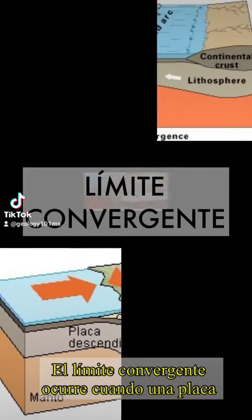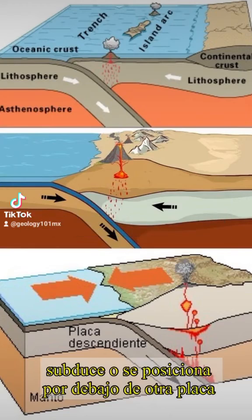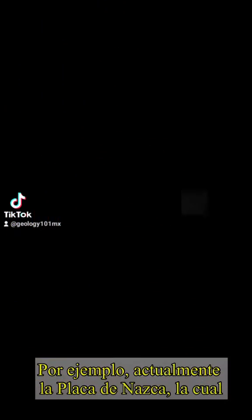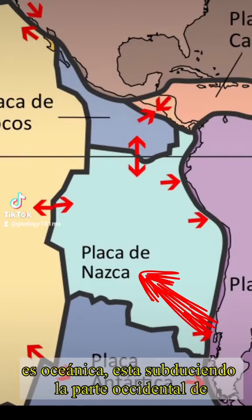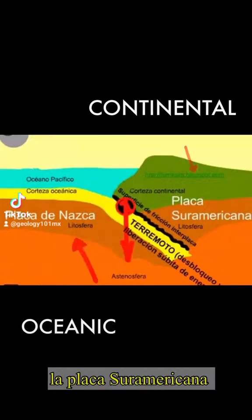The convergent boundary occurs when a plate subducts or goes under another plate. For example, currently the Nazca Plate, which is oceanic, is subducting the western part of the South American Plate, which is continental.